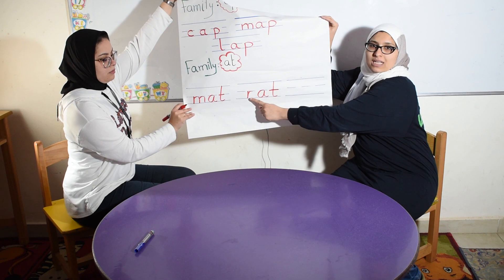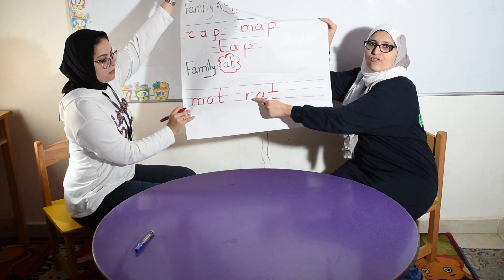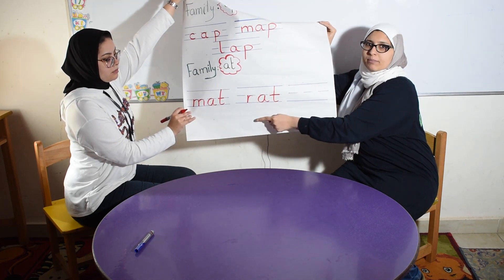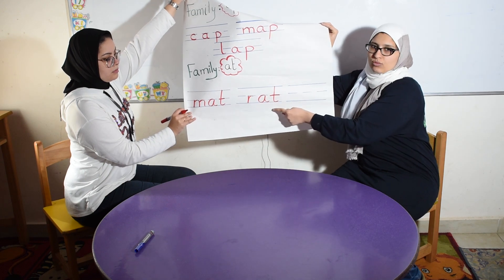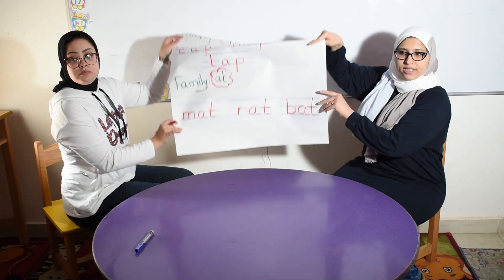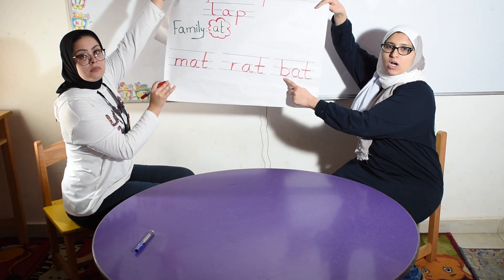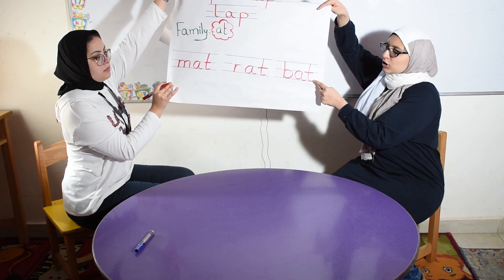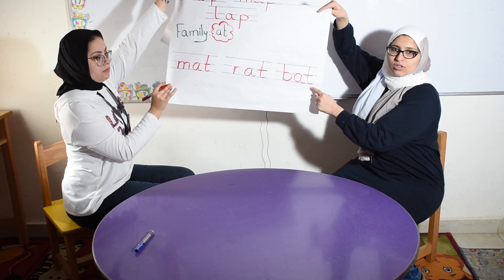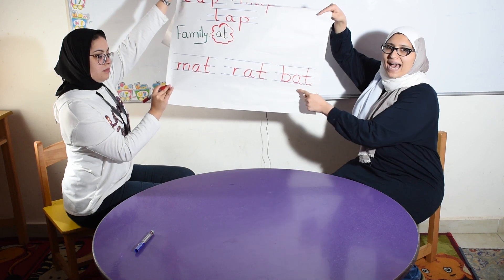Here we have sound R, A, T. R, A, T. Rat. R, A, T. Rat. Again please. Rat. Try to read the last time. It's R, A, T. The last word here, you have sound B, A, T. Bat. Again? Bat. B, A, T. It's Bat. Bat.